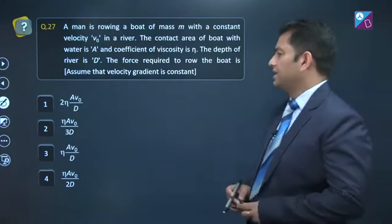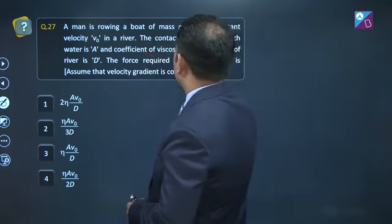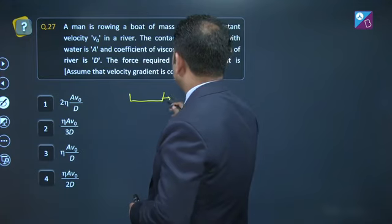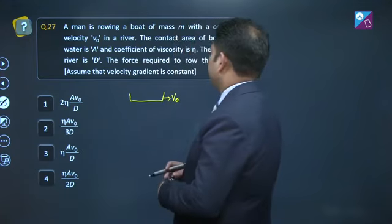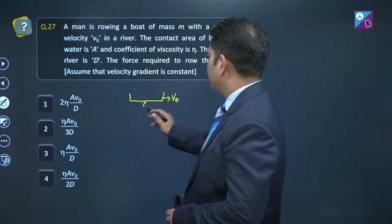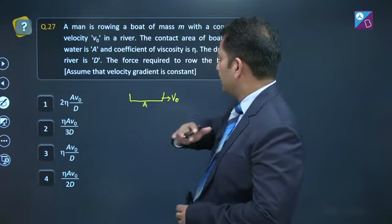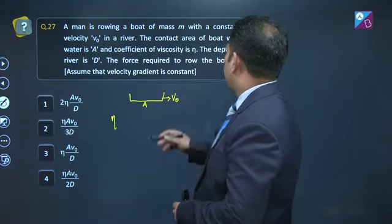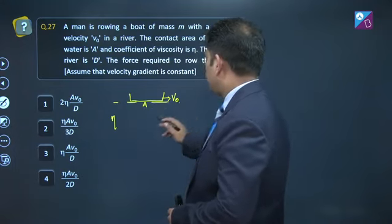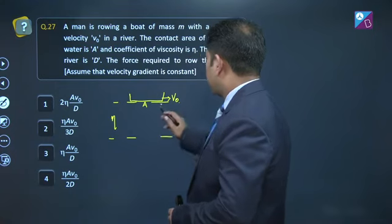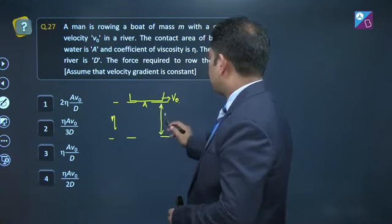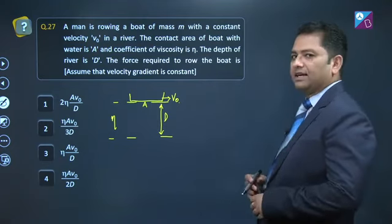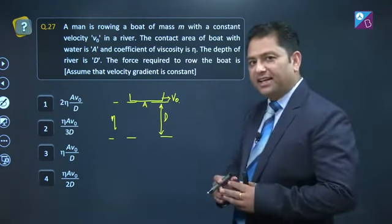Question number 27. A man is rowing a boat of mass m, this is boat, with a constant velocity v naught in a river. The contact area of the boat with the water, that is a, niche wala area. Coefficient of viscosity, that is eta. Depth of the river is d, alright. Toh ye river hai or river ki jo depth hai, that is d. Force required to row the boat, how much would be the force required? Ek bar velocity gradient nikal lete hai.